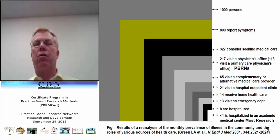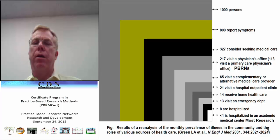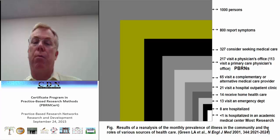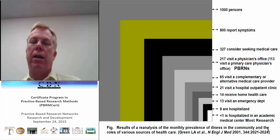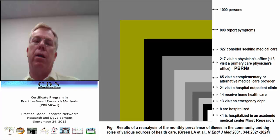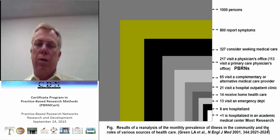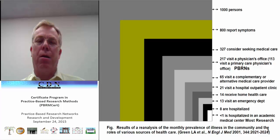This Ecology of Medical Care study provides a good rationale for practice-based research. Using nationally representative data, it looked at 1,000 people living in the community. In a given month, 800 people of those 1,000 report symptoms. 327 consider seeking medical care. 217 visit a physician's office, about half of those a primary care office. 65 go to a complementary provider, 13 visit an emergency department, eight are hospitalized, and less than one person in a month is hospitalized at an academic medical center. The small box here is where most research is conducted, while practice-based research networks typically work where most people get most of their care most of the time.